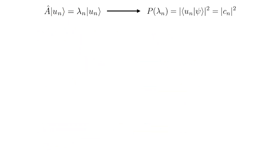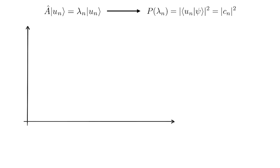We can describe this whole process in a more pictorial manner. Let's draw a pair of axes. On the horizontal axis we place the different eigenvalues of the operator — here I am picking arbitrary values for them. As we've discussed, what these eigenvalues are only depends on the operator A, and it doesn't depend on the state of our system.